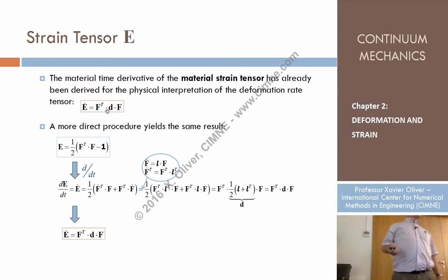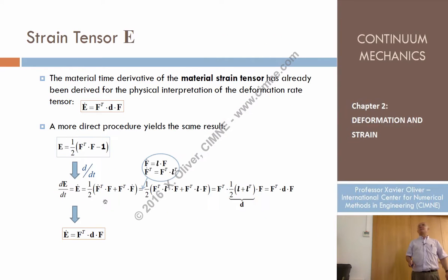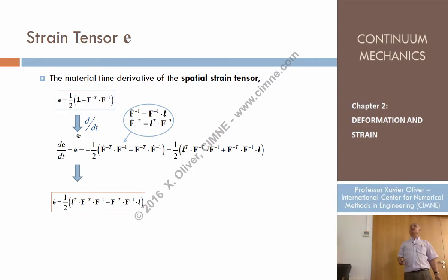What is the material time derivative of the Lagrangian strain tensor? Well, we have found this expression. It's proven on the basis of the definition of E and taking into account the previous time derivatives we derived. By doing that, we recover the expression Ė = F^T Ḟ. That's the mathematical implication.